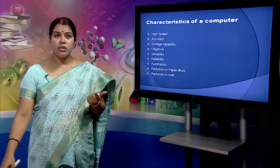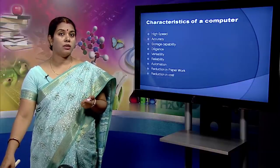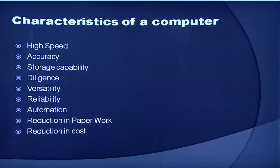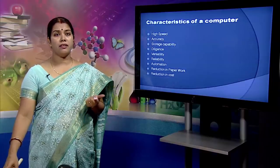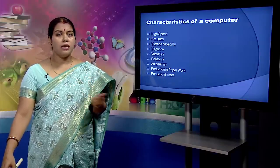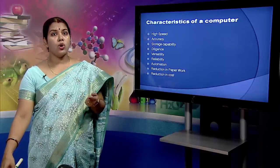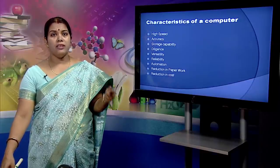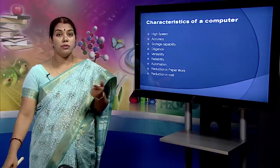A computer can do a repeated task with the same speed and accuracy. The next characteristic is versatility. There are a variety of applications that are there for the computer. A computer is a versatile machine — it can be used to solve problems ranging from engineering problems to layman problems. The next characteristic is reliability. Modern electronic components have long lives and hence nowadays we all rely on computers.